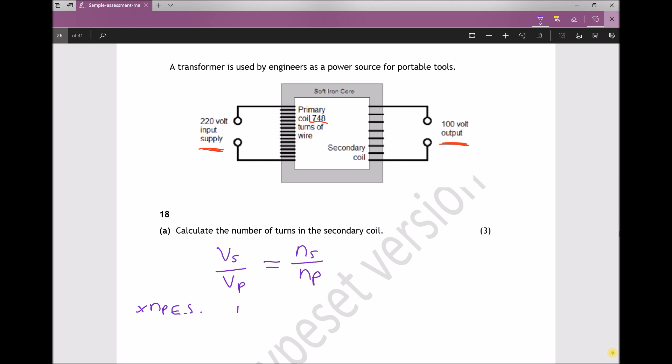And that will leave me with NS, the thing I'm trying to find, equals VS over VP multiplied by the number of turns on the primary coil NP.